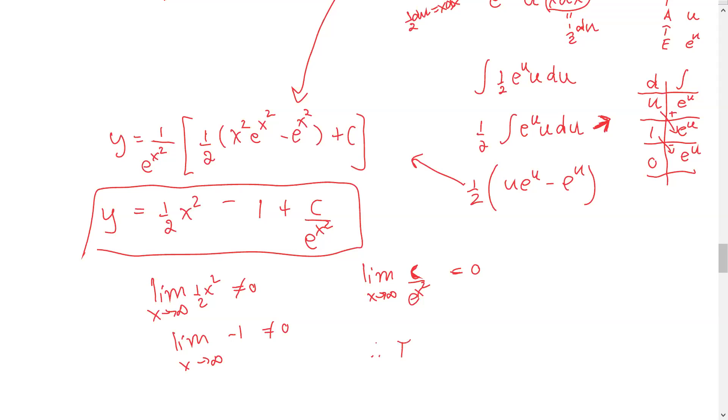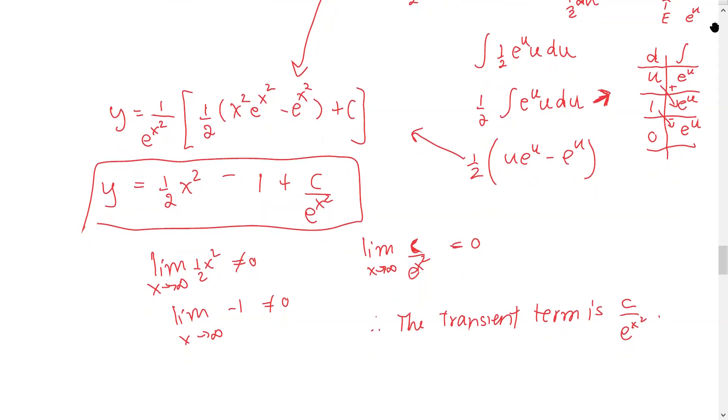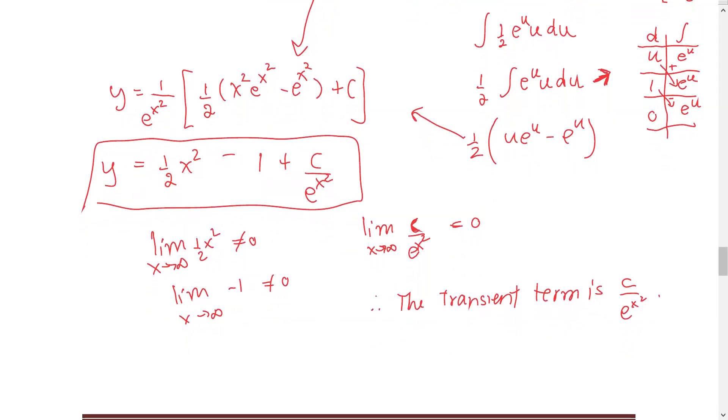The limit of this term goes to zero. Therefore, the transient term is C over e to the x squared. What does it tell you? That means in the long term or when you look at the asymptotic graph of this solution, it will be this function or the parabola.